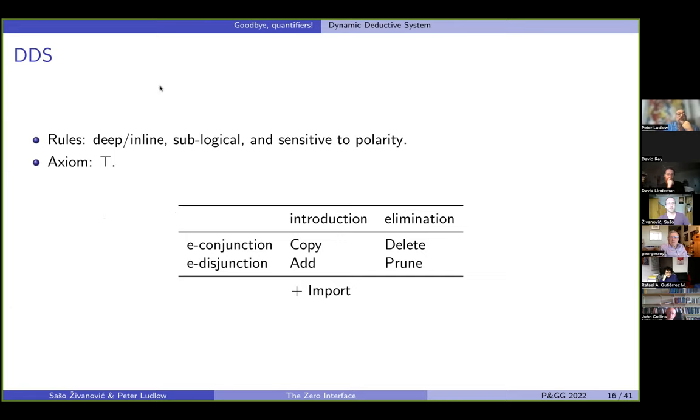So one feature of our DDS is that rules are deep, they are inline rules, they can work anywhere inside of the formula. And as you can see from the list of these rules here, well, don't read prune yet, because you have no idea what it is. But copy, delete and add, you can kind of imagine, these are very simple dumb operations, we say the kind of sub-logical operations. And as we will see, because they are sensitive to polarity, that's where the logic comes from. By the way, so we have one more like interface rule, bringing in the axioms, and we have one single axiom truth. That's easy.